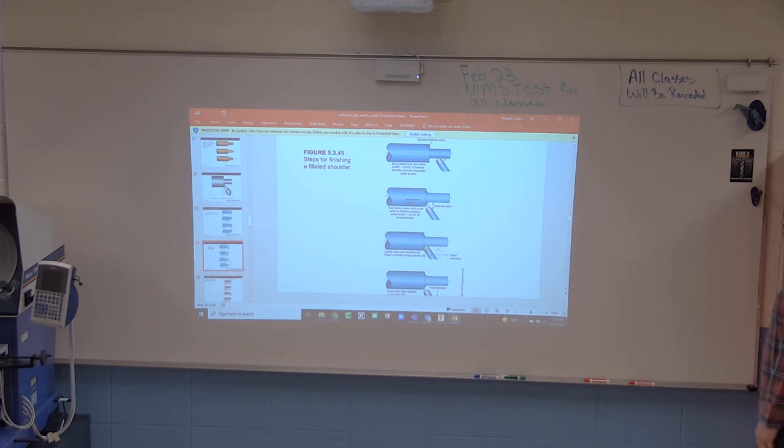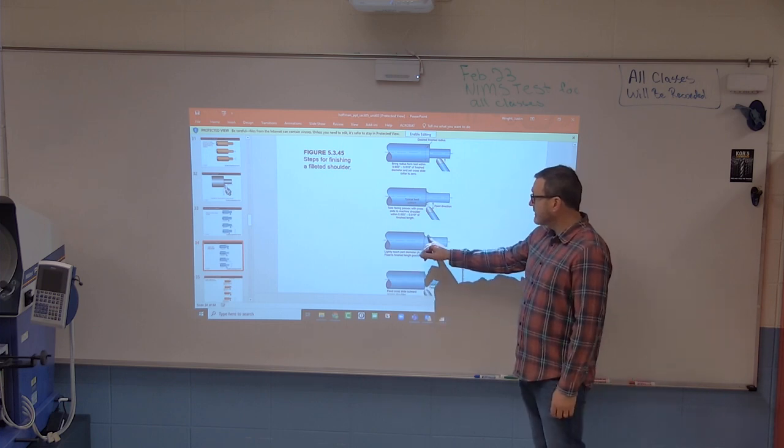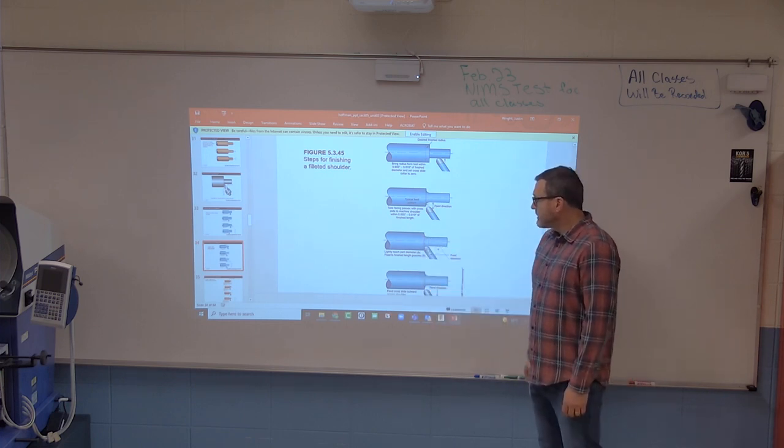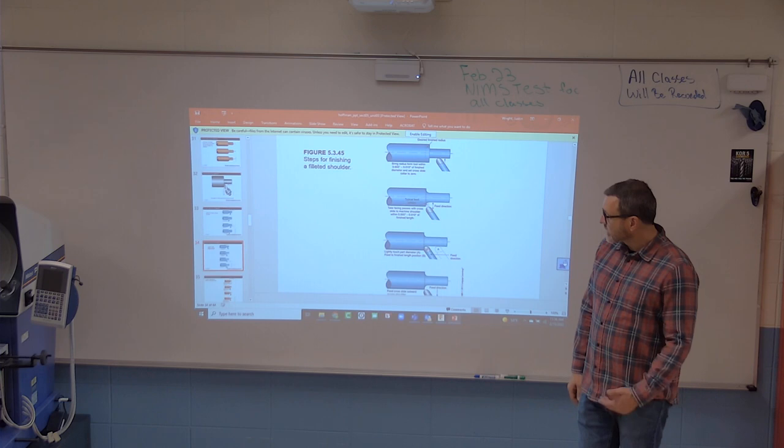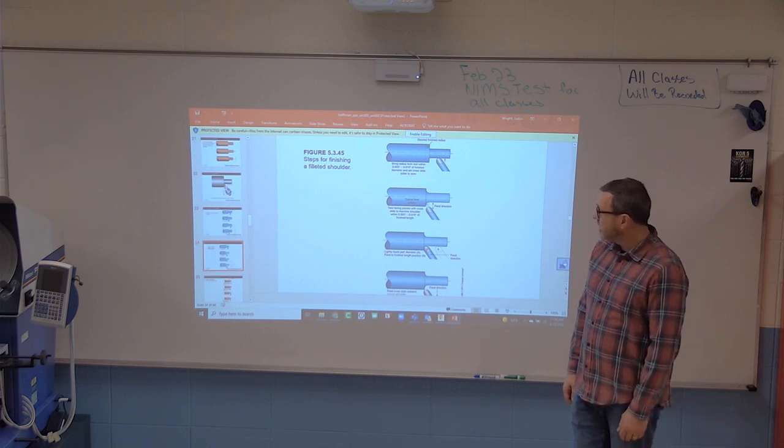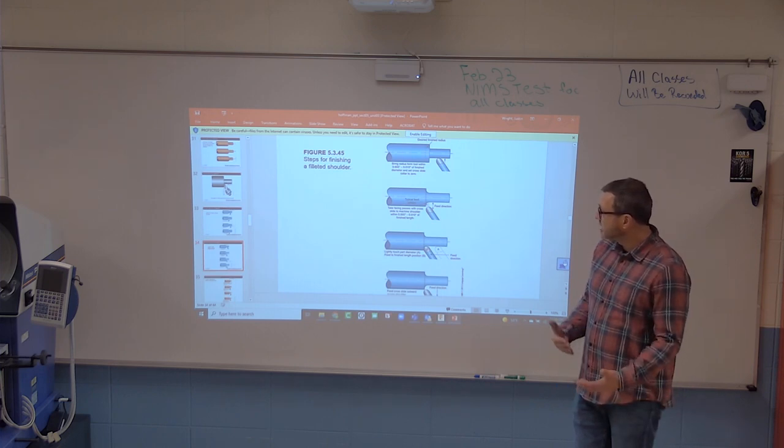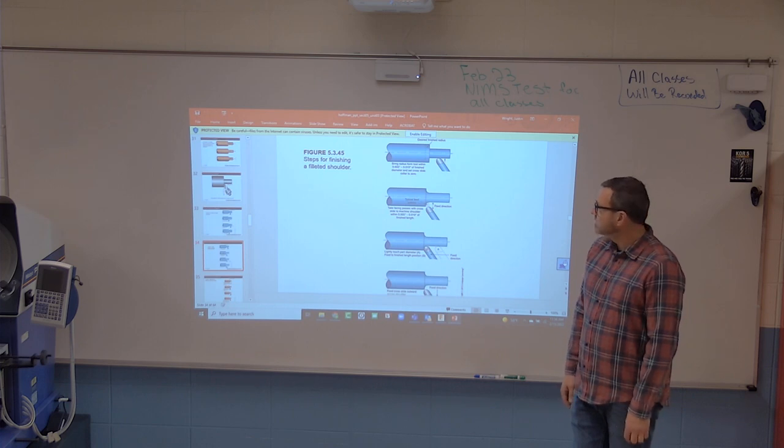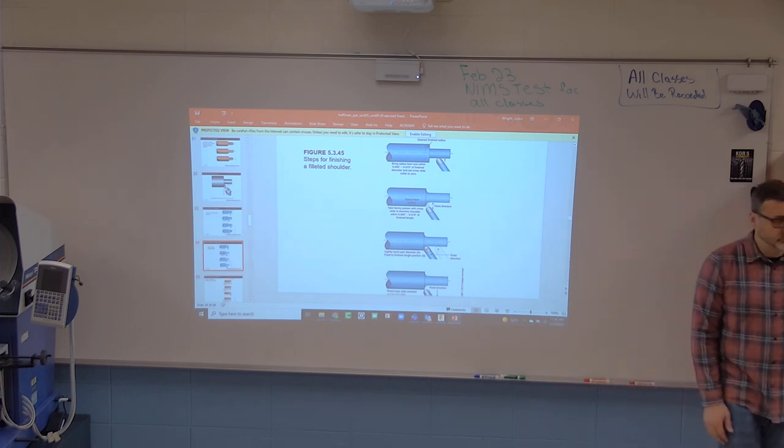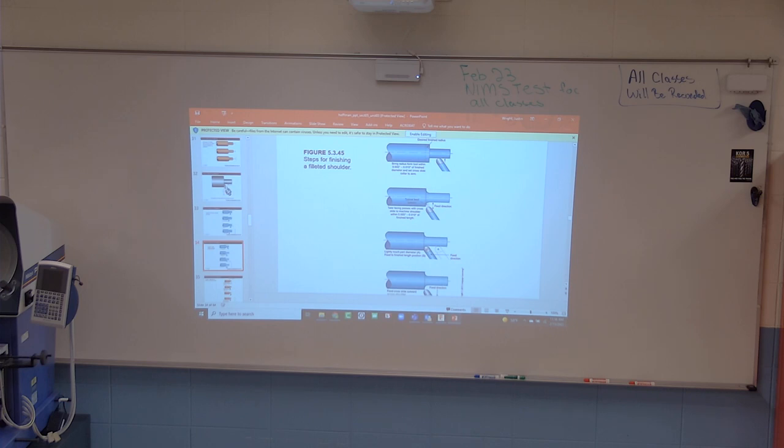If you're running a tool that has a radius in there, or if you need a radius in the corner, typically our inserts have radiuses, some kind of radius in the corner, but if you have a bigger radius or a need for a bigger radius, you're going to take the high-speed steel and make your own radius for that.